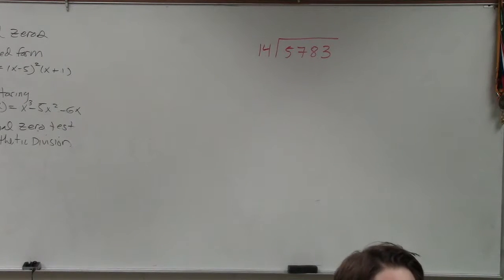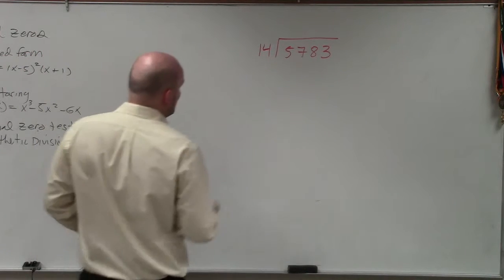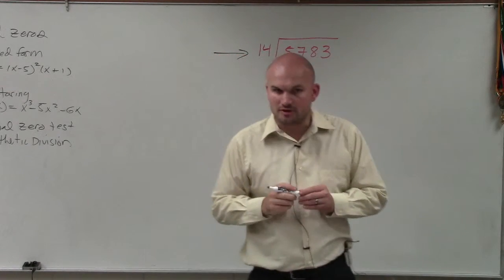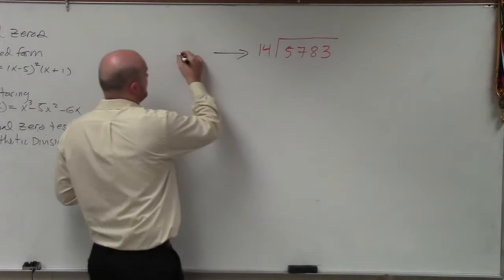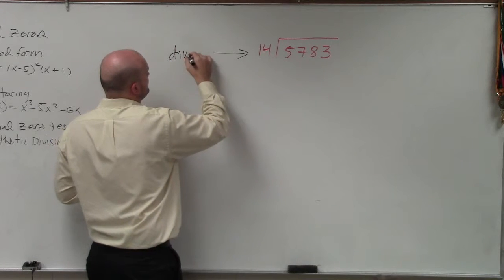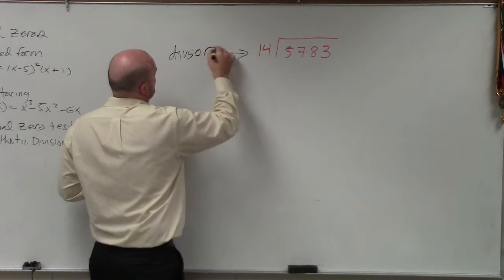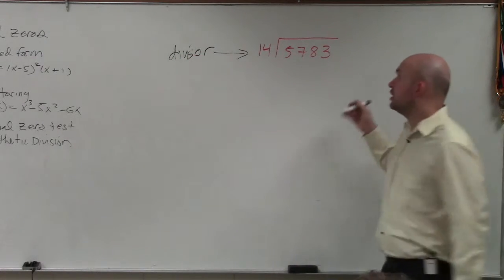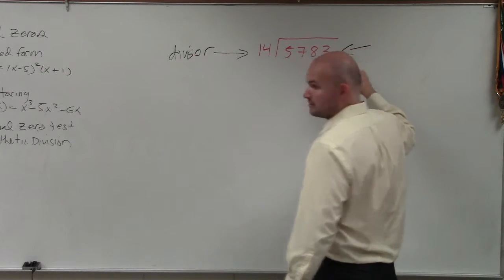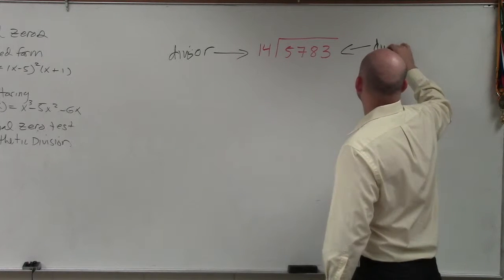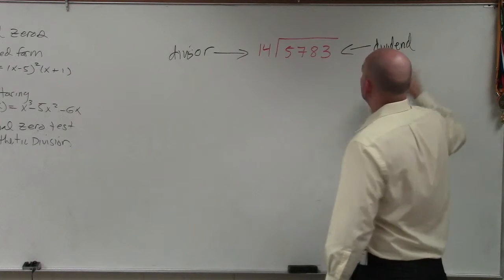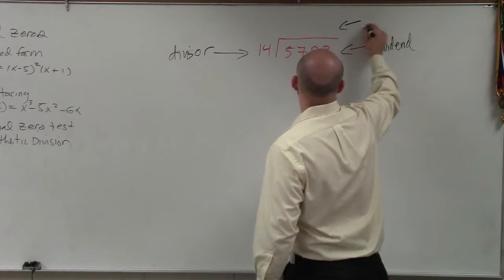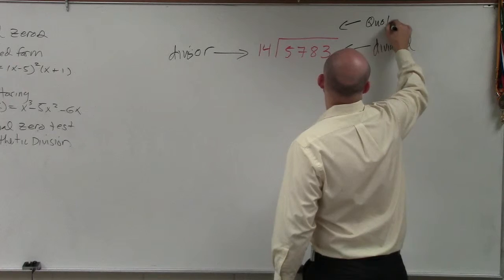There's a couple things I want to make sure you understand when we're doing long division - the different components. First, this 14 is the divisor. That's what we're dividing into our dividend, which is the number we're dividing into. When we take a divisor and divide it into a dividend, we end up with an answer, which is called a quotient.